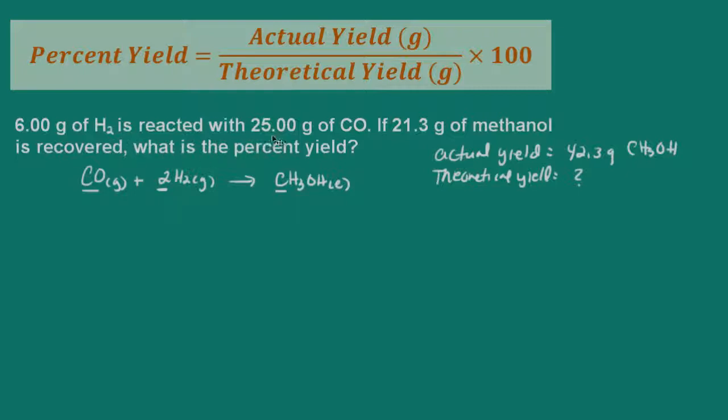So let's go ahead and look at this problem. We have 6 grams of hydrogen being reacted with 25 grams of carbon monoxide. If 21.3 grams of methanol is recovered, what is the percent yield? So we're given the actual yield, which is 21.3 grams. So we're given the actual yield. We're told that that's how much was actually recovered after the experiment. So what we have to find is a theoretical yield, because we need to compare our actual yield with theoretical and then multiply it by 100. So let's go ahead and work the problem like we've been doing in the past. And I'm not going to write out the mole ratios and all of that. If you need more help with stoichiometry, then I suggest you watch the first three videos.